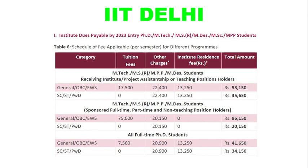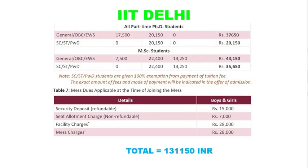So that's ₹53,150 for one part. Moving on to the next slide — Table Number 7 shows the mess dues applicable at the time of joining. The security deposit for the mess is ₹15,000, which is huge compared to other IITs.